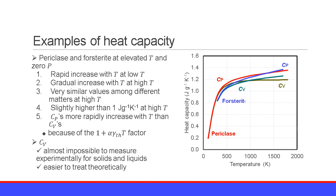The isobaric heat capacity Cp increases more rapidly with temperature than the isochoric heat capacity Cv. This is because of the factor (1 + α · γ_th · T), which includes temperature T, so Cp increases more rapidly especially at high temperatures. However, experimentally the isochoric heat capacity is almost impossible to measure for minerals, because it is almost impossible to keep volume constant at high temperatures. Conversely, Cv is easier to treat theoretically because the volume increase is a secondary factor.